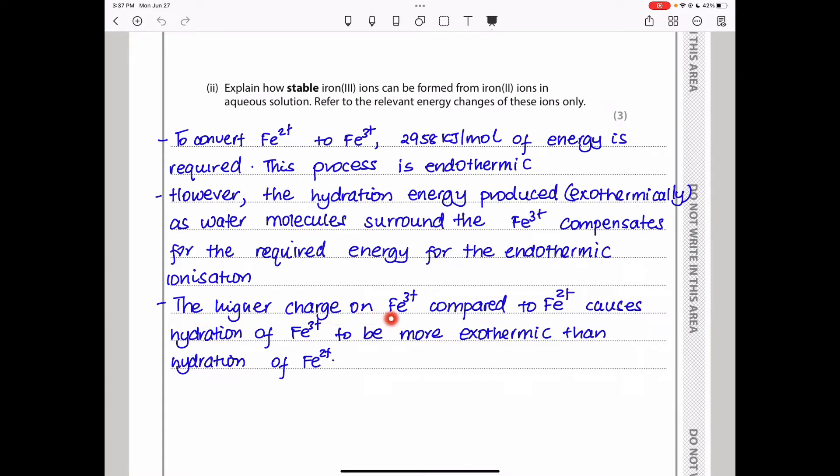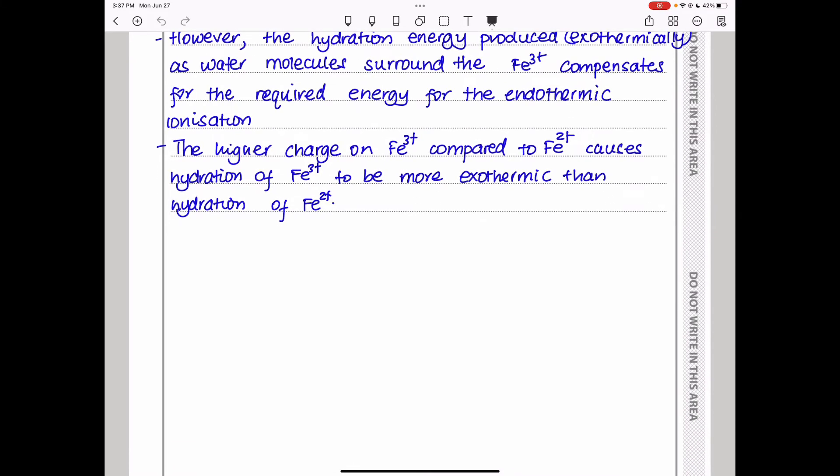If the exothermic energy released when the water molecules attach onto the Fe3+ is greater than the required endothermic energy, then this process is going to be easily feasible. The higher the charge on Fe3+—this is a higher charge—shows that Fe3+ has a stronger attraction to the water molecules in comparison to Fe2+, meaning the bond or the attraction with the water molecules is going to be stronger, and therefore the released energy is going to be stronger.